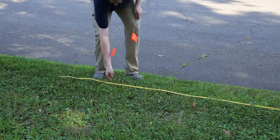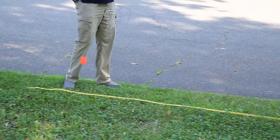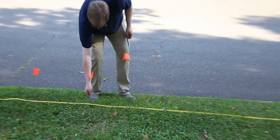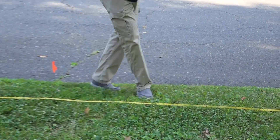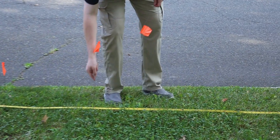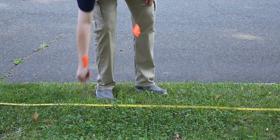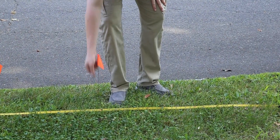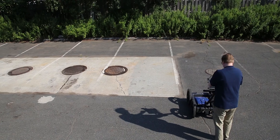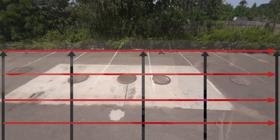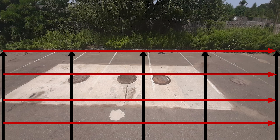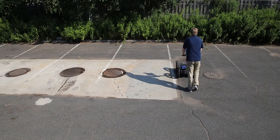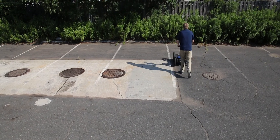Begin by marking out the zero lines of your grid. This can be done with chalk on asphalt or concrete, or marker flags and spray paint on soft, natural surfaces. If you are going to do 3D analysis, accurate alignment is imperative, and a physical alignment grid is mandatory for good results.